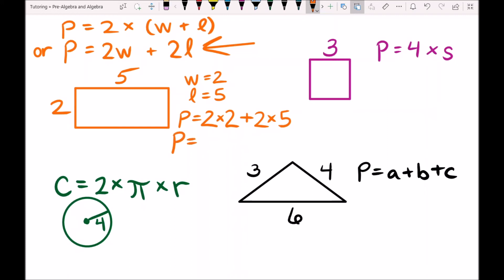Now let's use this equation here. So perimeter equals 2 times the width which is 2 plus 2 times the length which is 5. Remember order of operations, we do our multiplication before our addition. So 2 times 2 is 4 plus 2 times 5 is 10. Perimeter of this rectangle is 4 plus 10 which is 14.